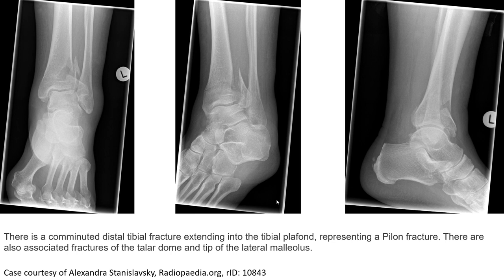This is a second example of a pilon fracture, where we can see there is a comminuted distal tibial fracture extending into the tibial plafond, representing a pilon fracture. There are also associated fractures of the talus and the tip of the lateral malleolus.